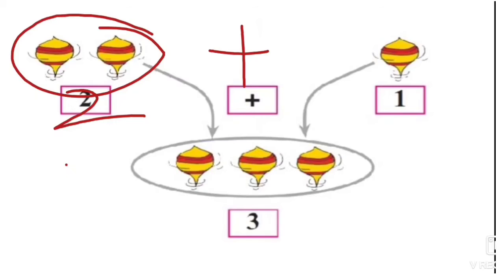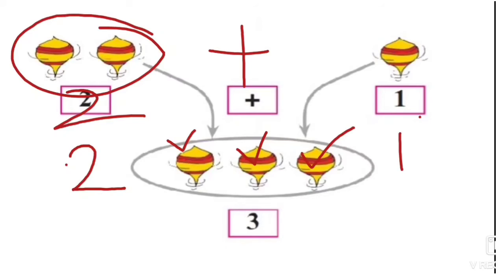We have to add one top to it. When we put all the tops together, how many tops do we get? We will get three tops: one, two, three. It means two plus one equals three. Understood? Very good!